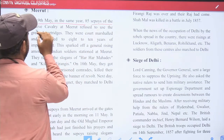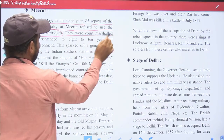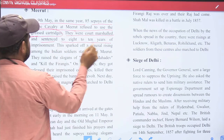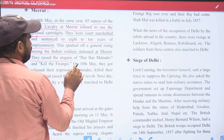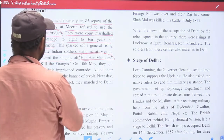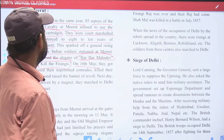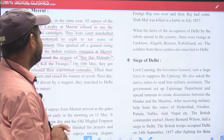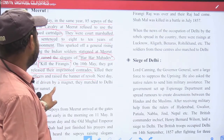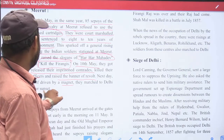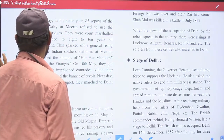On 9 May of the same year, 85 cavalry sepoys refused to use the greased cartridges and many were sentenced to 8 to 10 years in jail. The uprising greatly intensified in Meerut. The slogans 'Har Har Mahadev' and 'Kill the Firangi' were raised. On 10 May, the imprisoned soldiers were released, killed their officers, raised the banner of revolt, and before sunset marched towards Delhi.